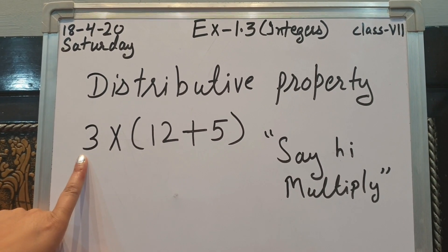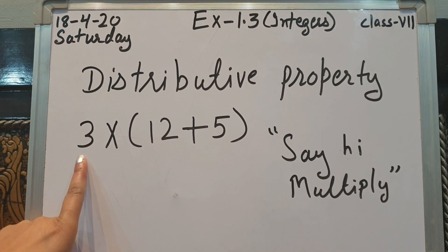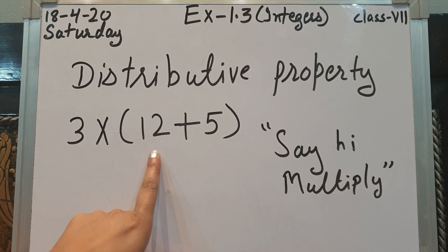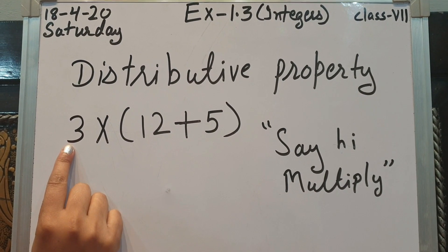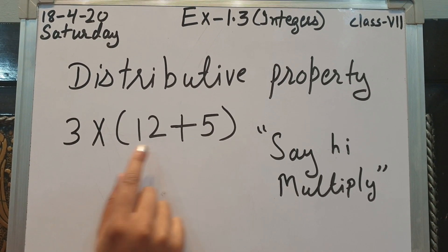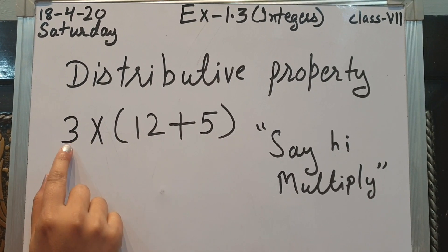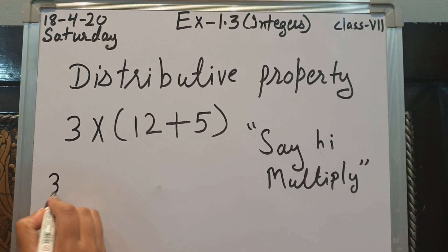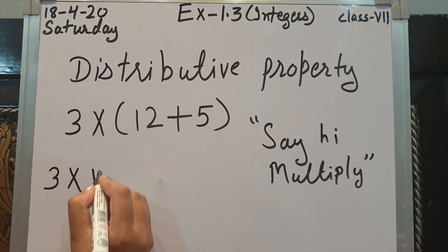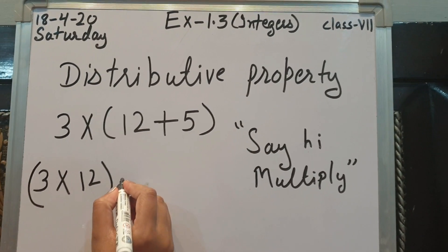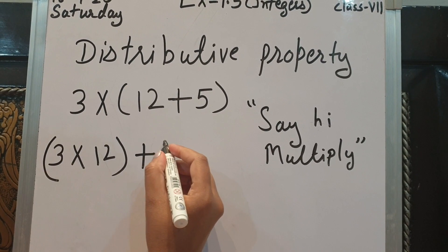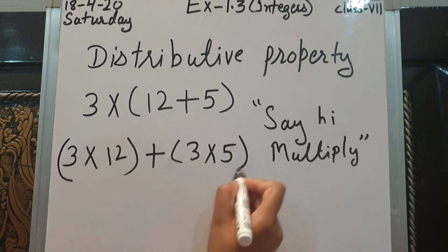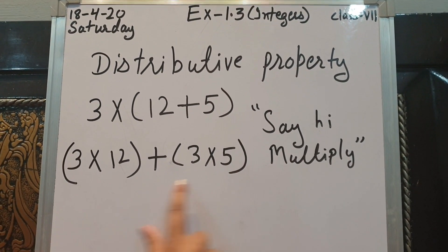He is outside the home and he has to come inside. So when he enters the home, he will say hi to the persons inside — there are two persons. So 3 will say hi to 12, then 3 will say hi to 5. That is plus sign between them — that is why we write plus. This is about the distributive property.